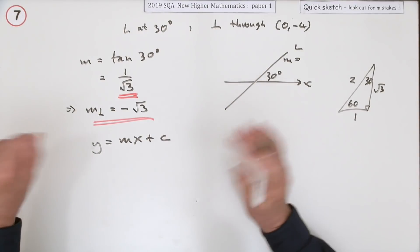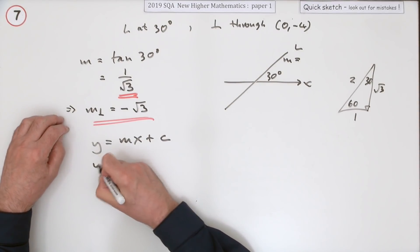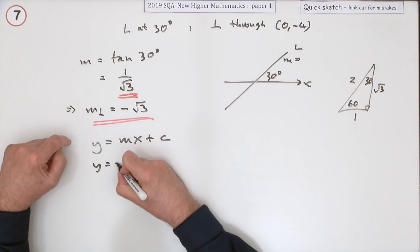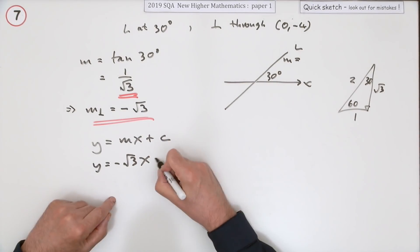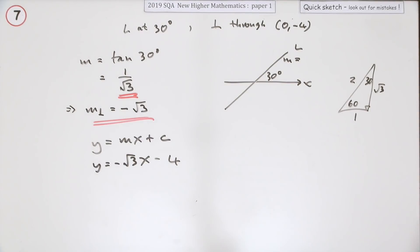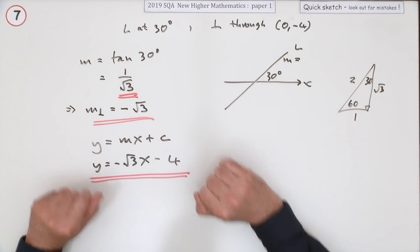There's no difference in the end, it's a matter of seconds between them. So y is going to equal, the gradient is negative root 3x and c - it cuts the y-axis at minus 4. That was quite short and sweet for 4 marks.